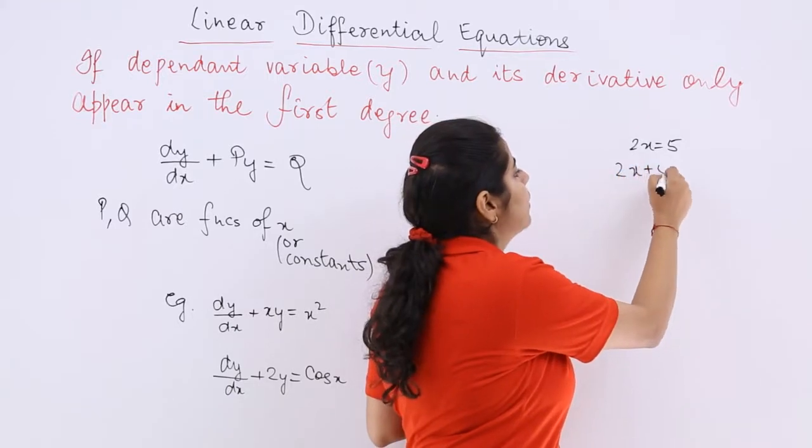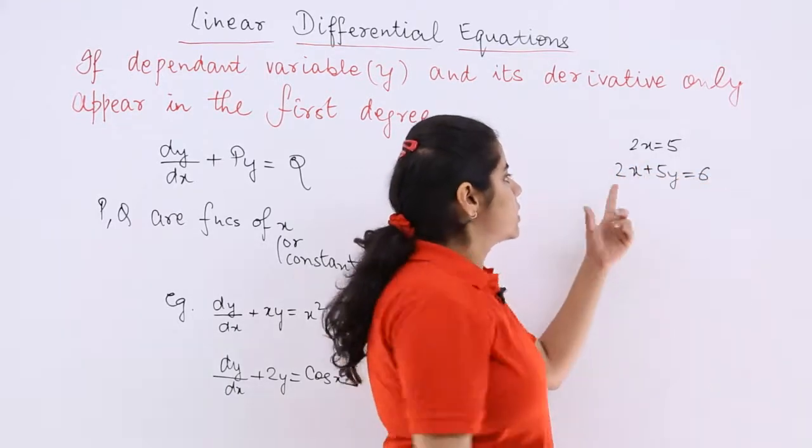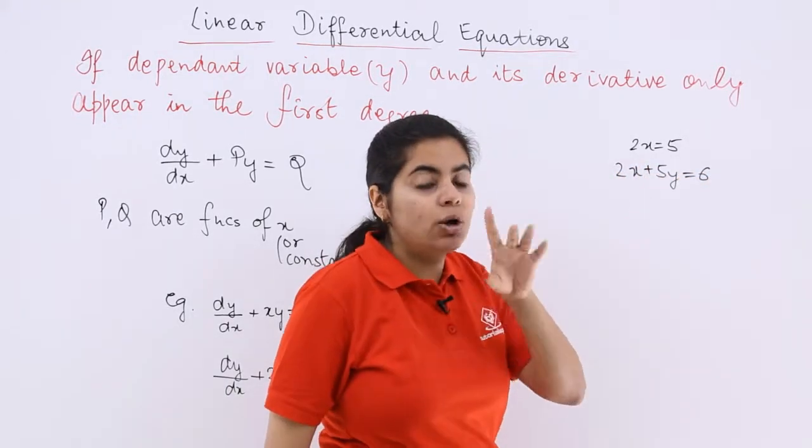A linear equation in two variables was what? Like this. Linear means the degree or power should be 1.